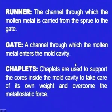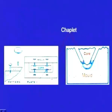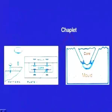Next are choplets. Choplets are used to support cores inside the mould cavity to take care of its own weight and to overcome the metallostatic force. Here we can see a mould with a core and choplets supporting it. When the core has to be suspended inside the cavity, choplets hold it in place. These choplets are made up of the same material as the casting, so when we pour the molten metal they fuse and become part of the casting.